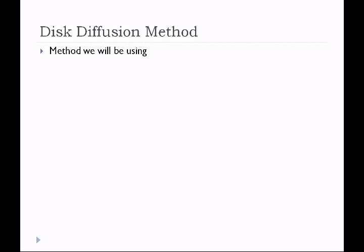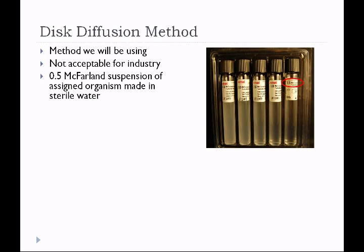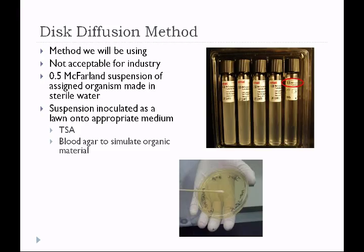The method used in lab is called the disc diffusion method. Though not acceptable for industry, it's a quick method to compare product effectiveness. We begin by making a 0.5 McFarland suspension of an assigned organism in sterile water, standardizing the amount of bacteria used on each petri dish. The suspension is inoculated as a lawn using a swab onto an appropriate medium — tryptic soy agar and also blood agar, which contains blood as organic material to show how organic matter affects the product.